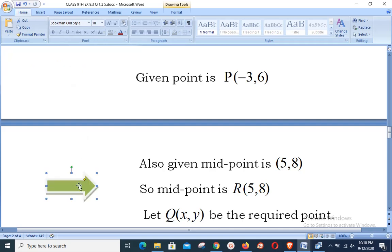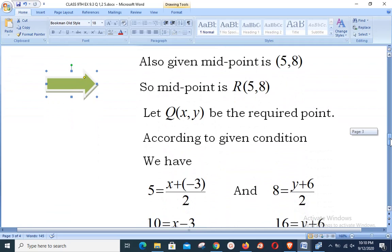We are given that point P is (-3,6) and the midpoint is (5,8). Let us name the midpoint as R(5,8). Let Q(x,y) be the required point. According to the given condition, we have: Since the midpoint formula says the x-coordinate is (x₁+x₂)/2, according to the diagram we have 5 = (x+(-3))/2, and the y-coordinate 8 = (y+6)/2.